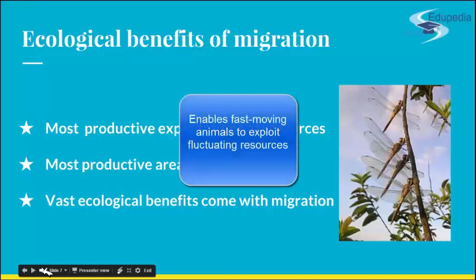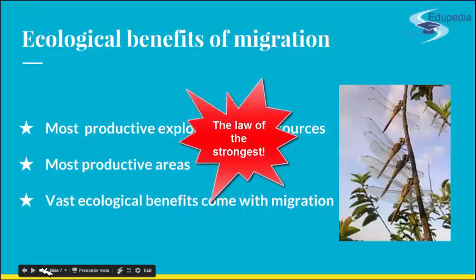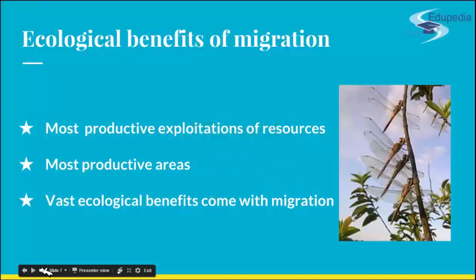Migration enables fast-moving animals to exploit fluctuating resources and to settle in areas where life would not be tenable for animals incapable of rapid travel. On the other hand, peaks of food production would be unexploited without the periodic presence of a migratory population. Migration's philosophy is essentially: use the most of everything you can get your hands on. If you are able to use everything that is given to you, use it, and your genes will be favored because you're fit enough to extract as much as possible from your surroundings, then move on and use the next.